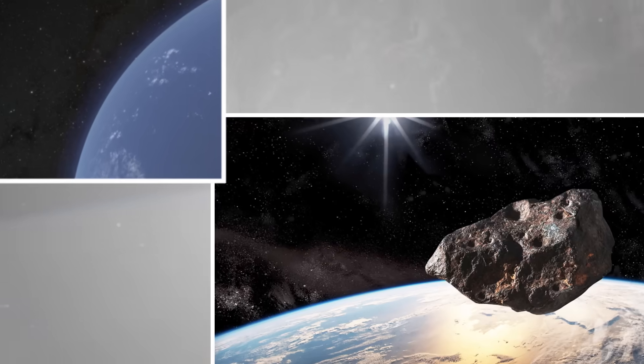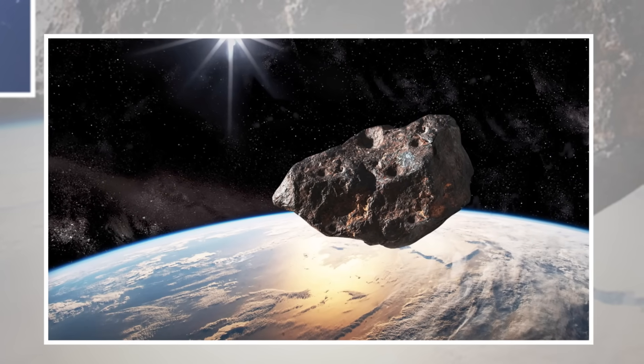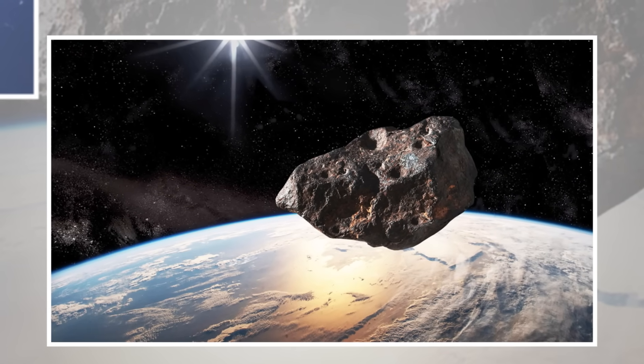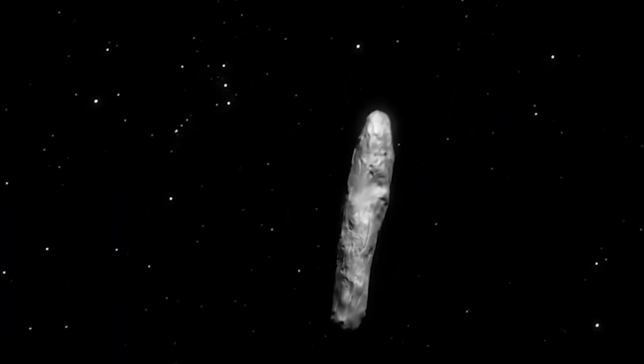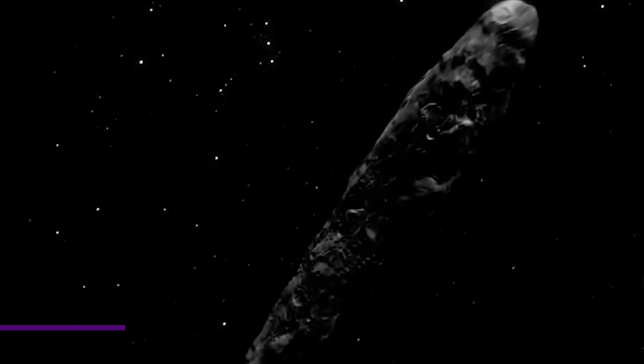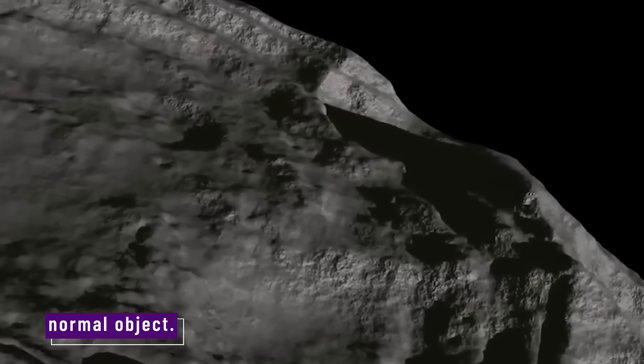Or it might be something engineered. Something that travels from system to system. Something built to watch, record, or test. Kaku doesn't jump to conclusions. But he reminds us, Oumuamua didn't act like a normal object. And neither does this.